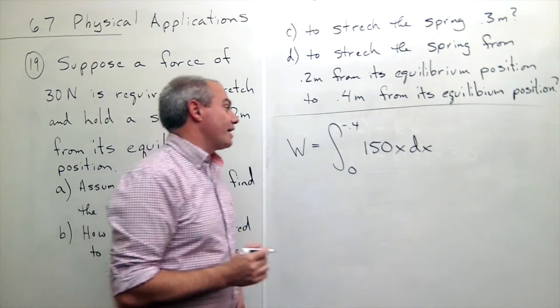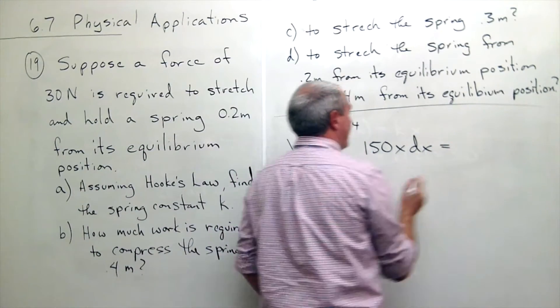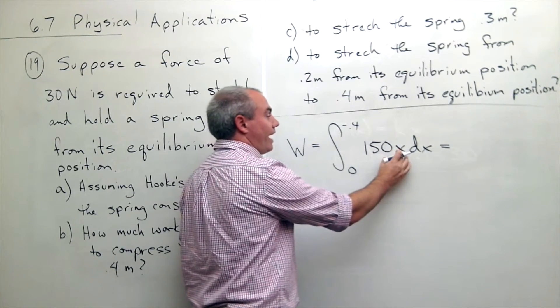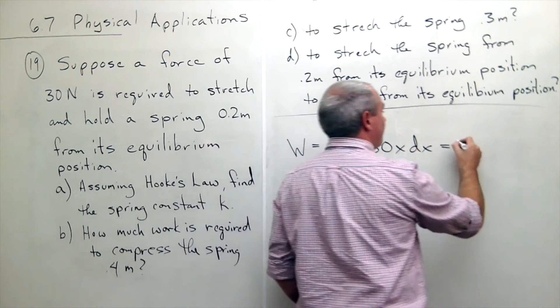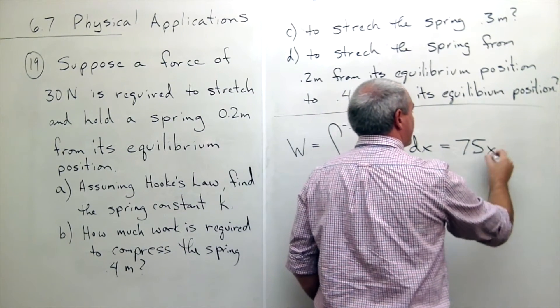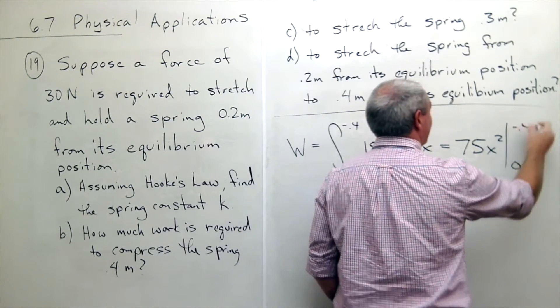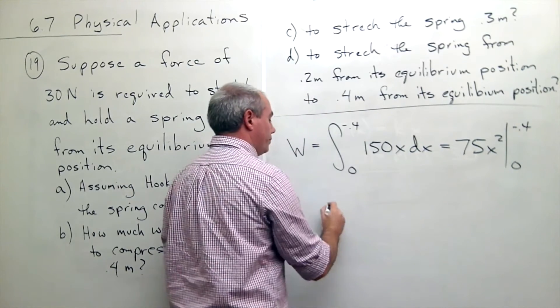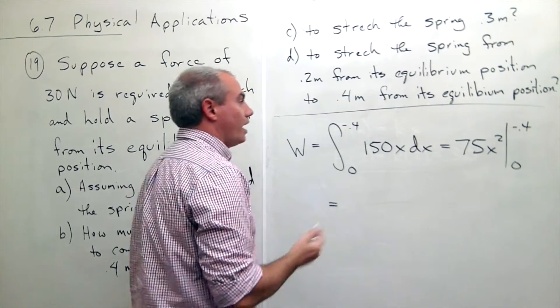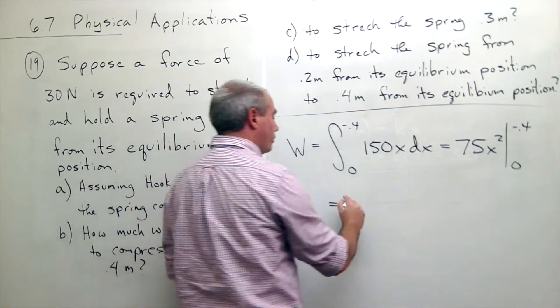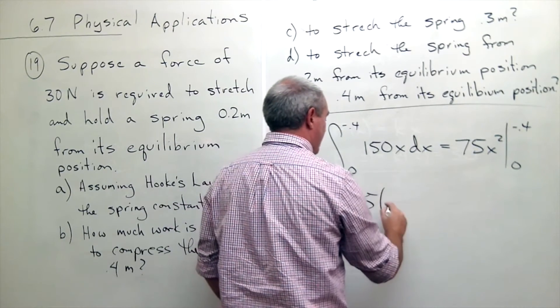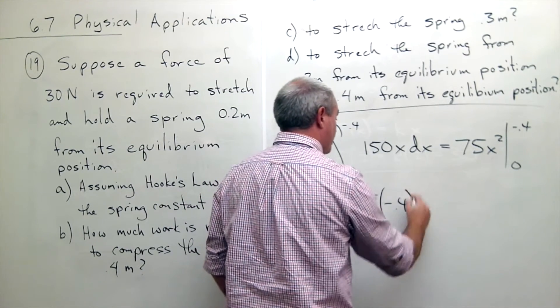So we can take an antiderivative here. The antiderivative of 150X would be 75 X squared, evaluated from 0 to negative 0.4. We can plug in the negative 0.4 and we get 75 times negative 0.4 squared.